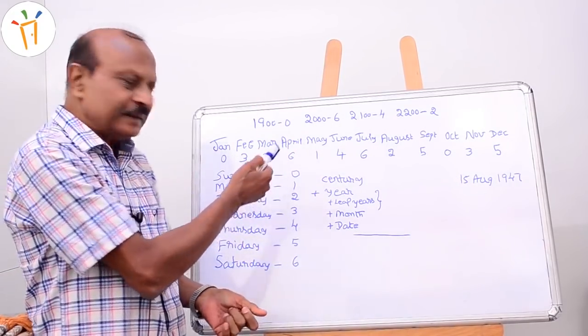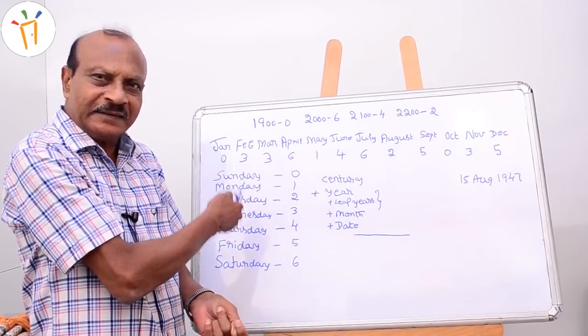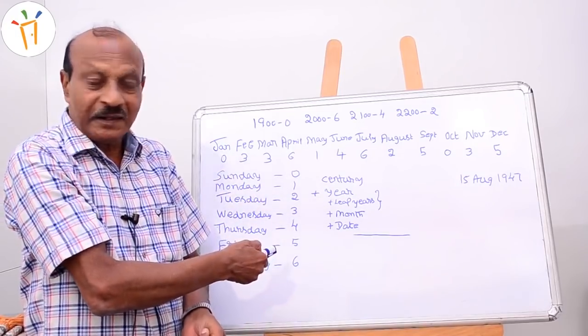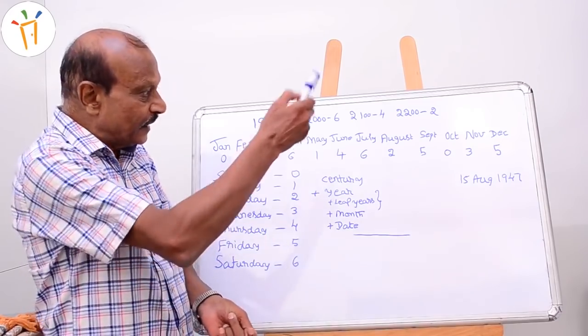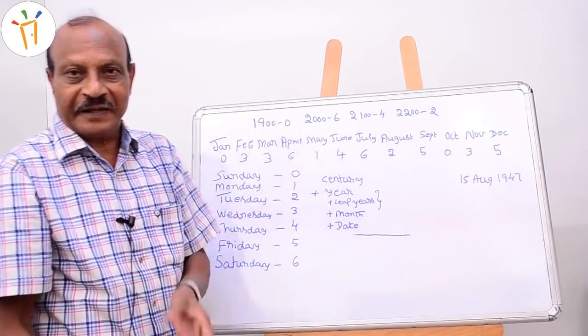Sunday is 0, Monday is 1, and likewise up to Saturday I have given code numbers. So with that, let's see how to find out the day of the week.